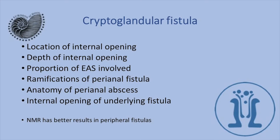Here we see the indications and the value of endoanal ultrasound in cryptoglandular fistula. We can easily locate the internal opening of the anal fistula, which is very important, as well as the depth of the internal opening and the proportion of the internal anal sphincter involved — because the most common operation for anal fistulas is lay-open. If we destroy a large proportion of the external anal sphincter we risk fecal incontinence. We can also assess the ramifications of the perianal fistula, the anatomy of the perianal abscess, and the internal opening of underlying fistulas, since about 60–70% of perianal abscesses are caused by an underlying fistula.